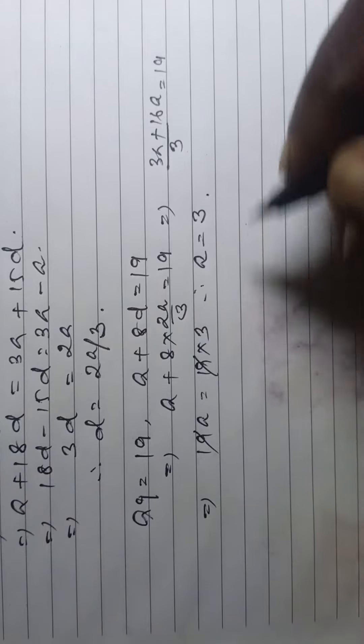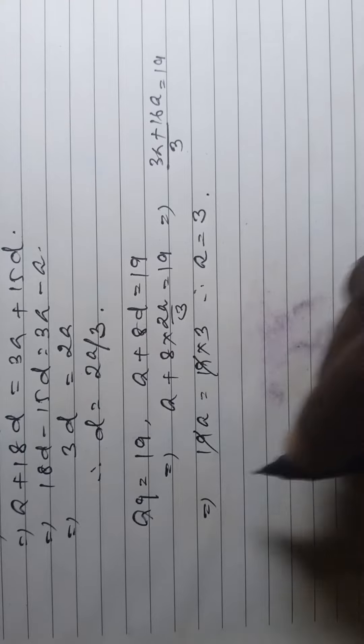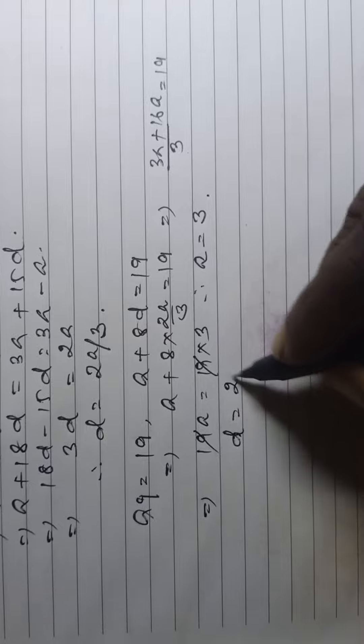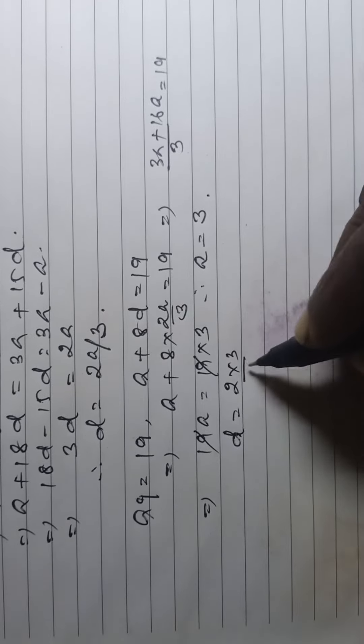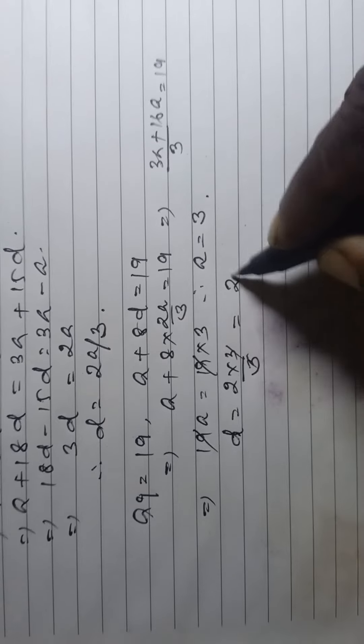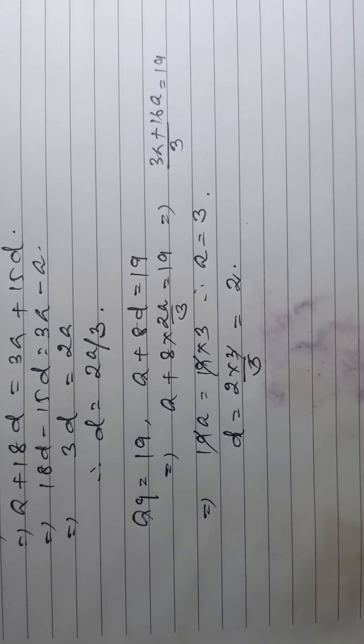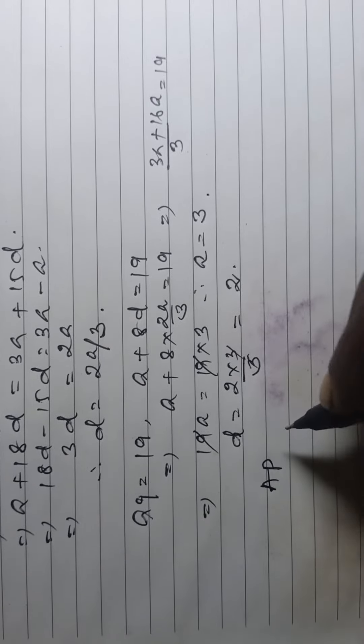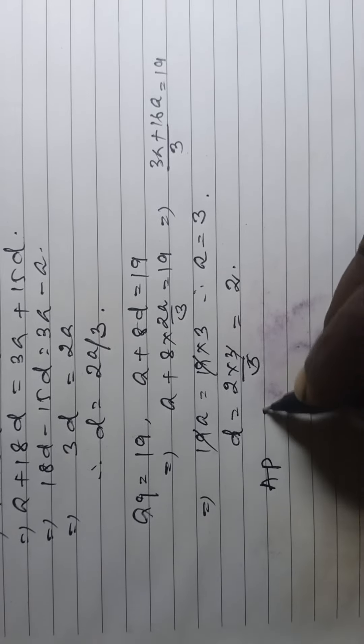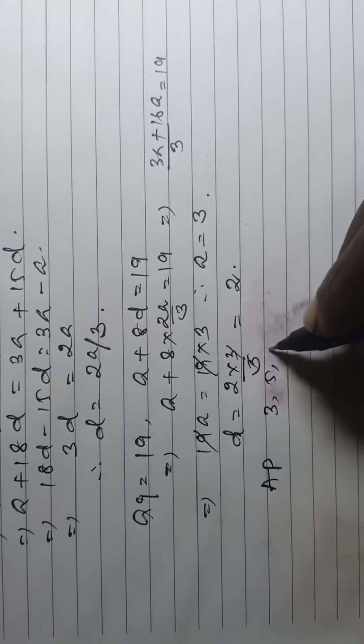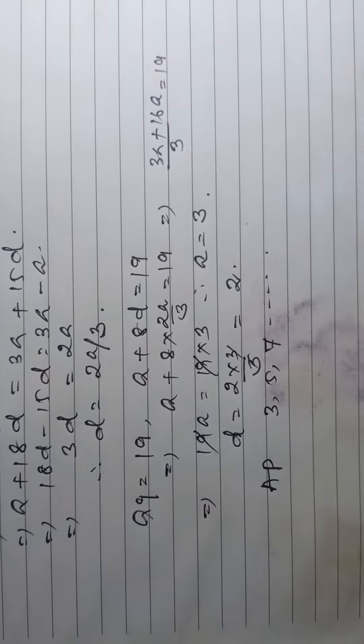Then, to get d, d is equal to 2 into 3 by 3. That is 2 as d. So, the AP series is 3, 5, 7 and so on.